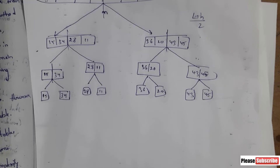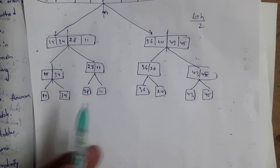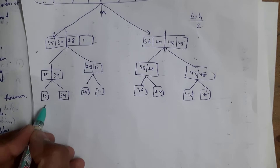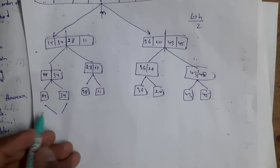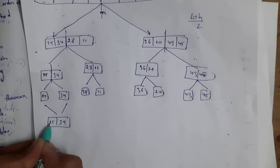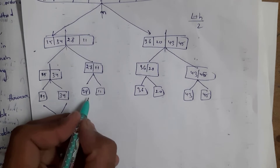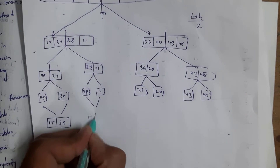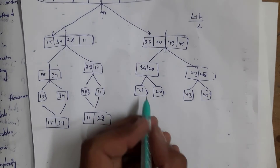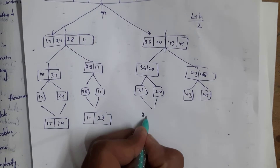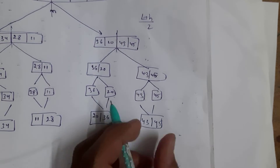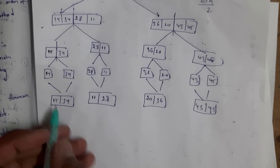After dividing each element, we combine in sorted manner. 15 and 34 are combined because 15 is smaller and 34 is larger. Similarly 11 and 28, because 11 is smaller and 28 is larger. Then 20 and 36, and similarly 43 and 45 — all arranged in sorted manner.